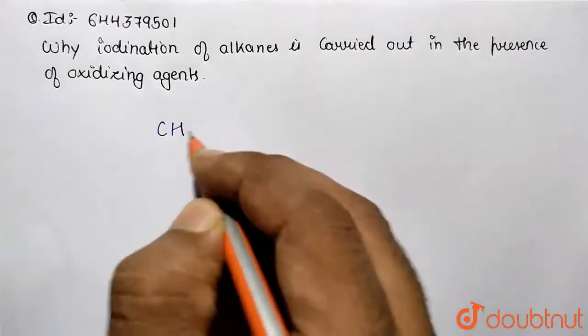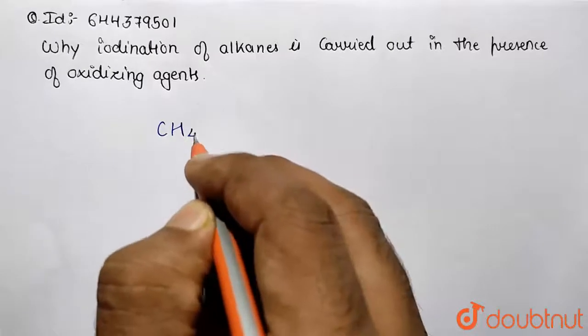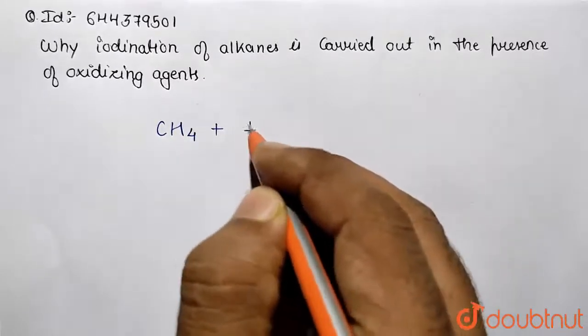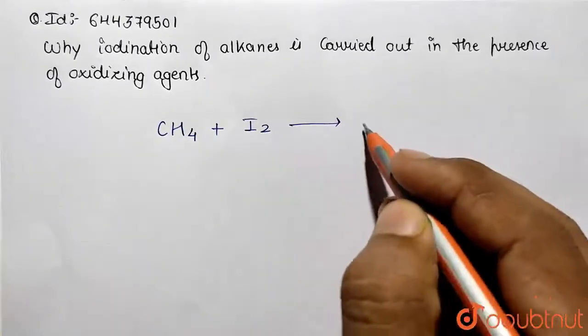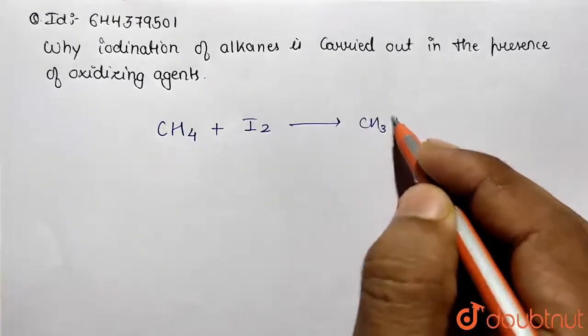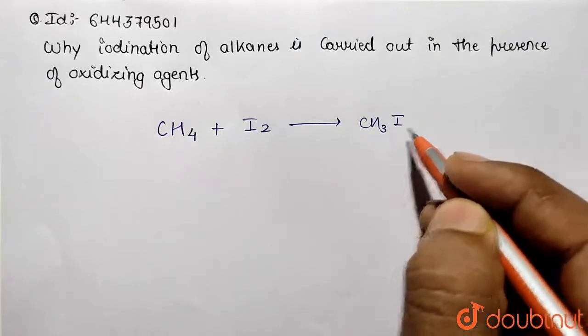So what we are having, this is our alkane, CH4 methane we have taken, and we are going to perform the iodination reaction. What happens is this is going to be converted to CH3I, so the corresponding product is being converted and HI is also formed.